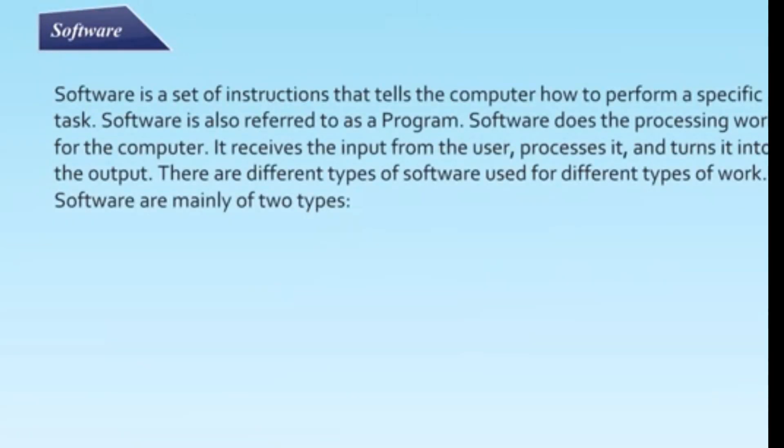Software. Software is a set of instructions that tells the computer how to perform a specific task. Software is also referred to as a program. Software does the processing work of the computer. It receives the input from the user, processes it, and turns it into the output. There are different types of software used for different types of work.